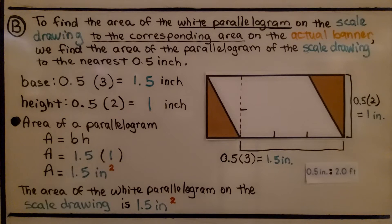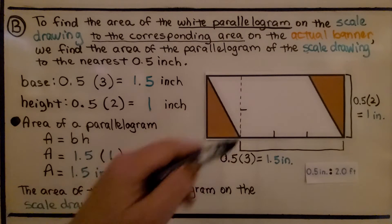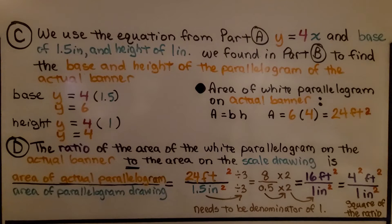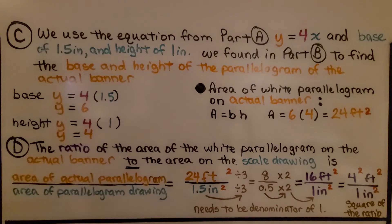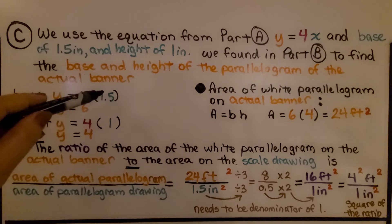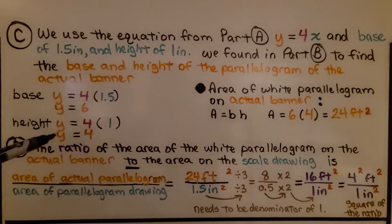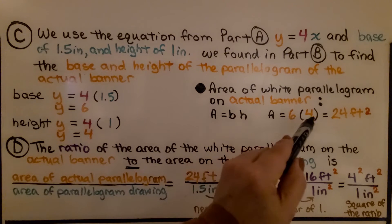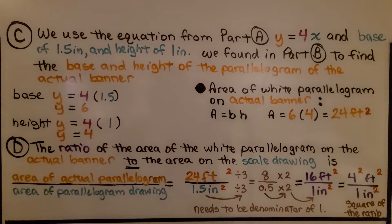Keep in mind, we're not looking for the entire area of the whole banner — we're looking for the area of just the white parallelogram part of the scale drawing, and then we'll find the area of that same part on the actual banner. Now we're at part C. Using the equation Y equals 4X from part A, and the base of one and five-tenths inch and height of one inch from part B, we find the actual banner dimensions. The base is four times one point five, which equals six. The height is four times one, which equals four. So six times four gives us twenty-four feet squared for the actual banner's parallelogram area.